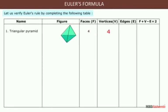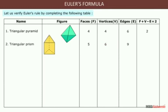A triangular pyramid has 4 faces, 4 vertices, and 6 edges. So 4 + 4 = 8, minus 6 equals 2. A triangular prism has 5 faces, 6 vertices, and 9 edges. So 5 + 6 = 11, minus 9 equals 2. A cube has 6 faces, 8 vertices, and 12 edges. 6 + 8 = 14, minus 12 equals 2.